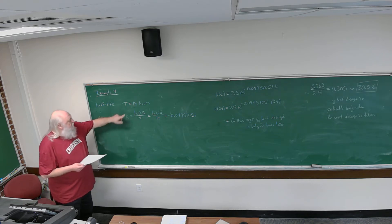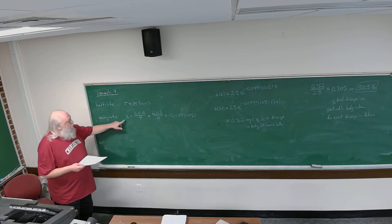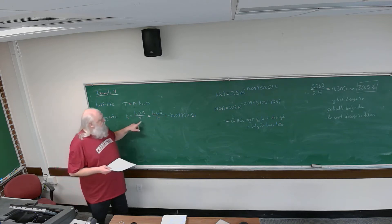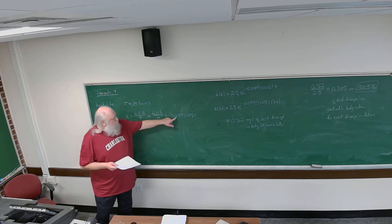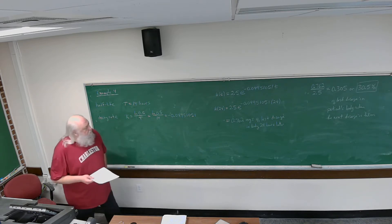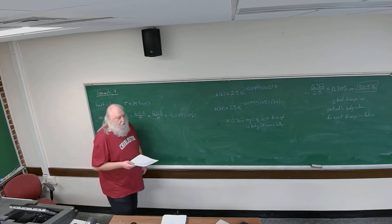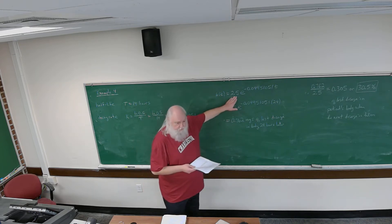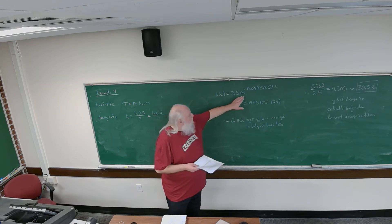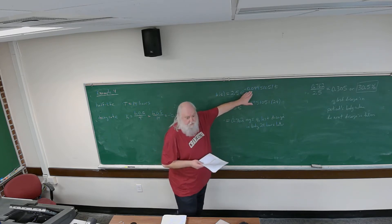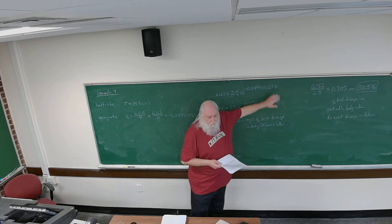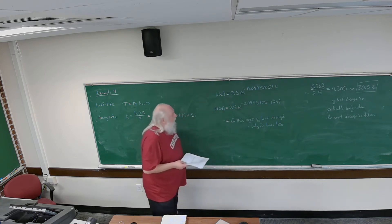Using the half-life, we can calculate the decay rate. The decay rate k is equal to the natural log of 0.5 divided by the half-life. In this case, k equals minus 0.04951051. Our mathematical model for the amount of the last dosage in the patient's body as a function of time is 2.5 milligrams times e raised to minus 0.04951051 times t.